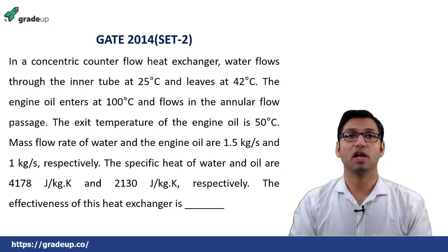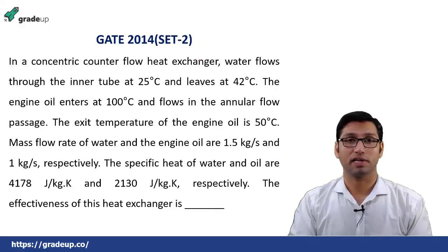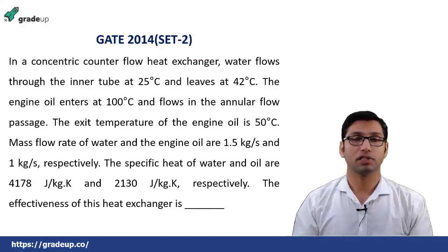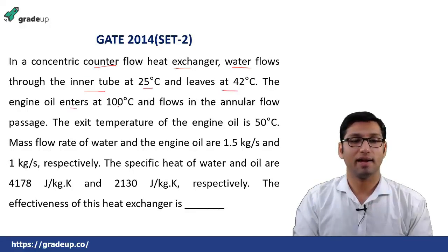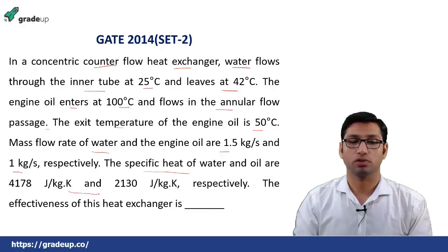In today's session, we are going to solve some previous GATE questions based on heat exchangers. The first question is from GATE 2014, Set 2. In this question, it is given that in a concentric counter-flow heat exchanger, water flows through the inner tube entering at 25°C and leaving at 42°C. The engine oil enters at 100°C and flows in the annular passage, with an exit temperature of 50°C. Mass flow rates of water and oil are 1.5 and 1 kg/s respectively. You have to determine the effectiveness of the heat exchanger.